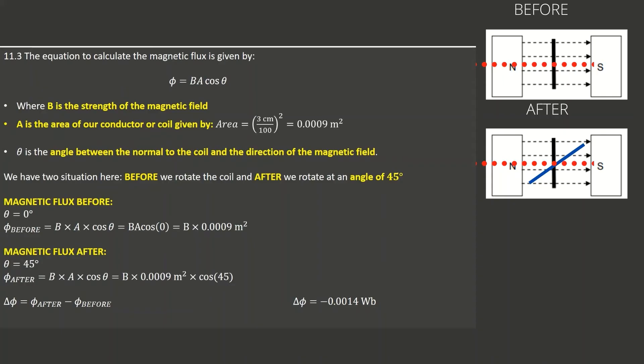The area calculates to 0.0009 m². The problem refers to two situations: before rotation, the coil is perpendicular to the magnetic field, meaning the normal to the coil and the field lines are parallel — the angle theta is 0 degrees. Since cos(0°) = 1, the magnetic flux before rotation is simply B × 0.0009 m².